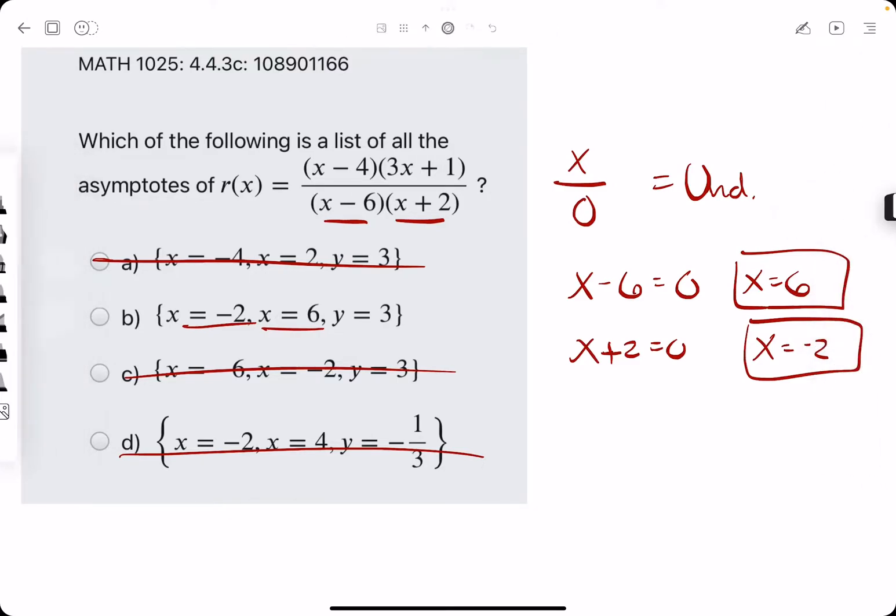So if we break out the eraser, we see that B will be our answer. Let's go ahead and talk about where this y equals three comes from.